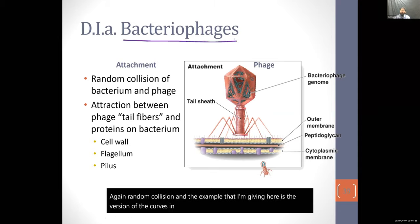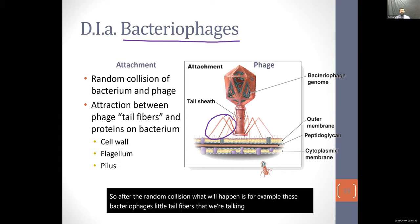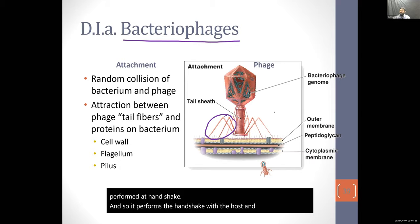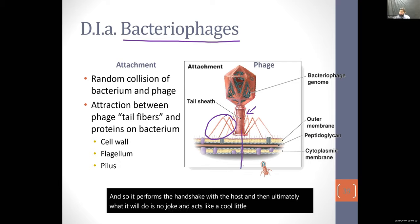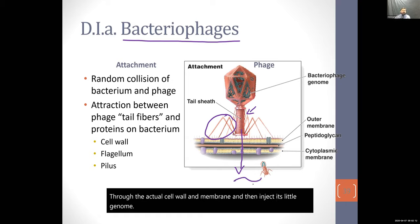This is illustrated using bacteriophages — for example, infecting E. coli or Salmonella. After the random collision, those little tail fibers perform the handshake with the host, and then the phage acts like a syringe, poking a hole through the cell wall and membrane and injecting its genome. It's more than just landing on your skin.